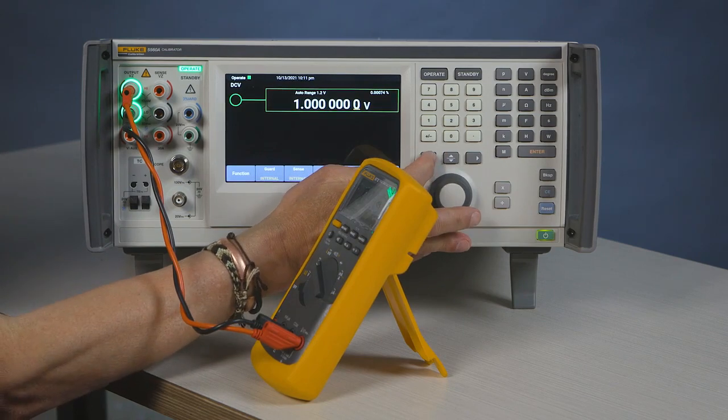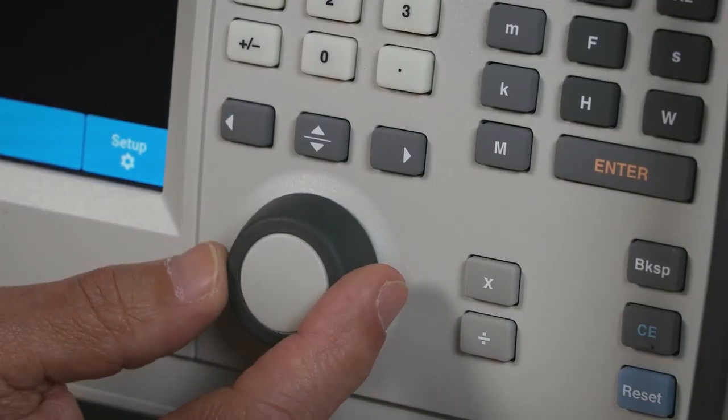At this point, you can make any correction to the DMM so it matches appropriately.